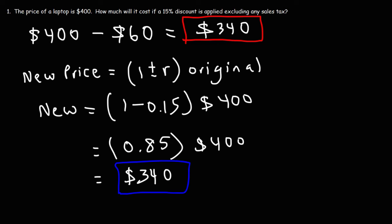Think about this mentally: this represents 100% of the original price of the laptop. If we have a 15% discount, that means we're going to pay 85% of the original price. And that's what we're doing here — if we calculate 85% of $400, we go directly to the final answer, which is $340.